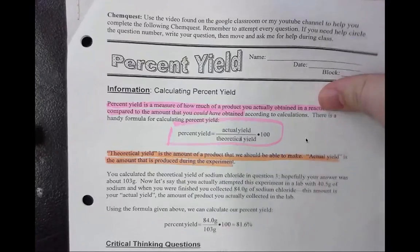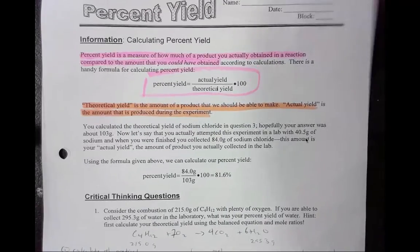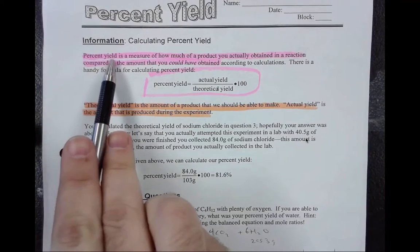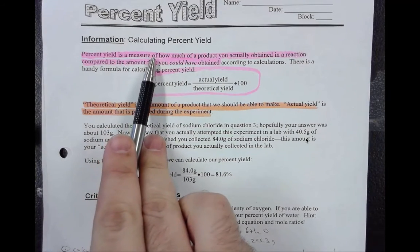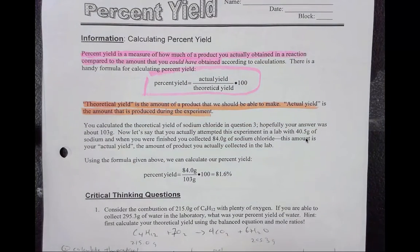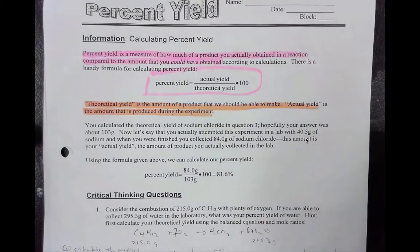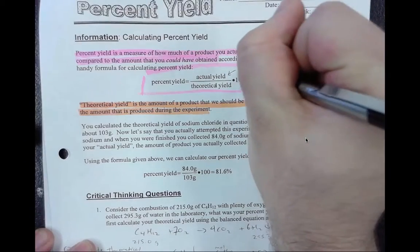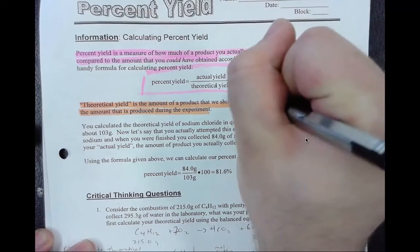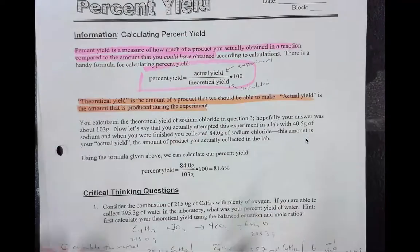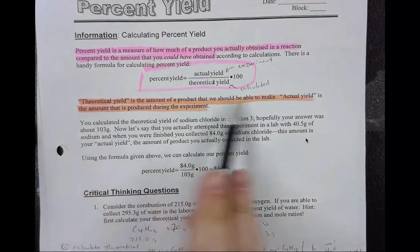Right up at the top it just jumps right into calculating the percent yield. So I highlighted some important stuff for us. You need to remember that the percent yield is a comparison of how much of a product you actually obtained versus the amount you could have obtained if you had perfect results. So this is the formula we use. The percent yield is the actual yield, so this is what we find in the experiment, and the theoretical yield is what we calculated.